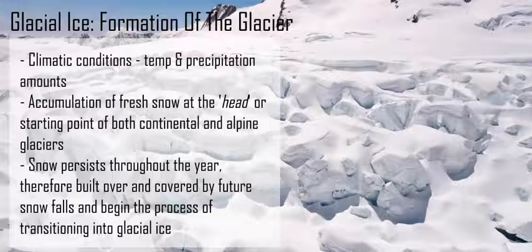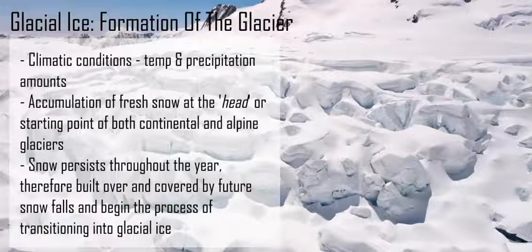You obviously need a consistent climate that's going to create snow with low temperatures, usually sub-zero, that's going to maintain the snow in its current form, not allow too much melting, and accumulate the snow over season after season. Year after year that snow is going to fall and accumulate in that location.